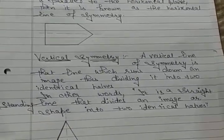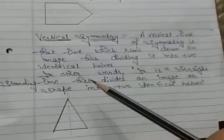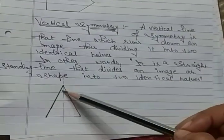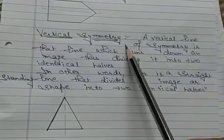Vertical symmetry. A vertical line of symmetry is that line which runs down. This is the symmetry line that says vertical symmetry.